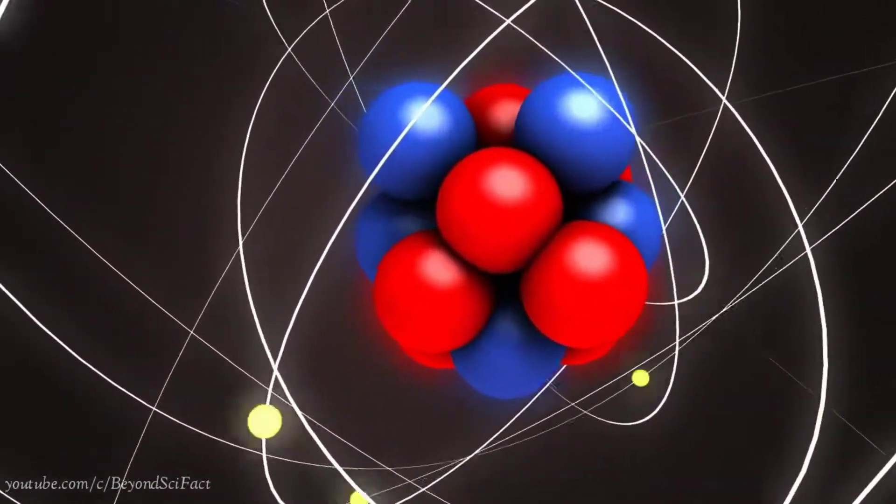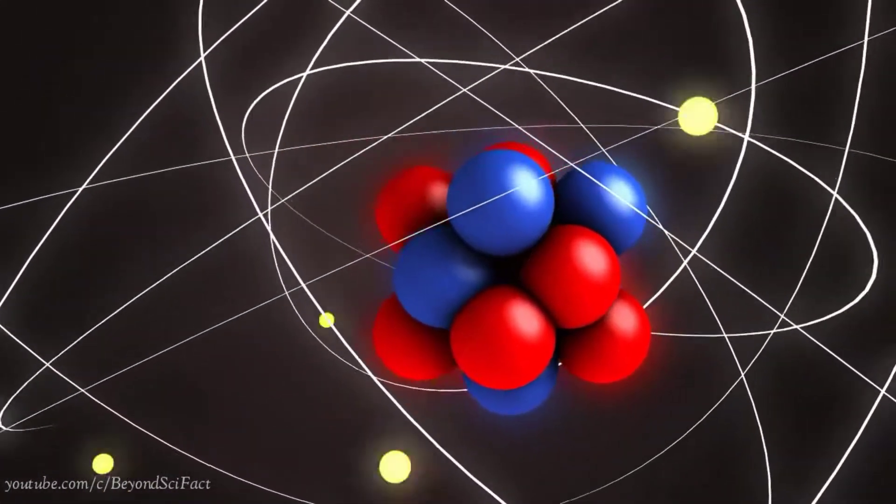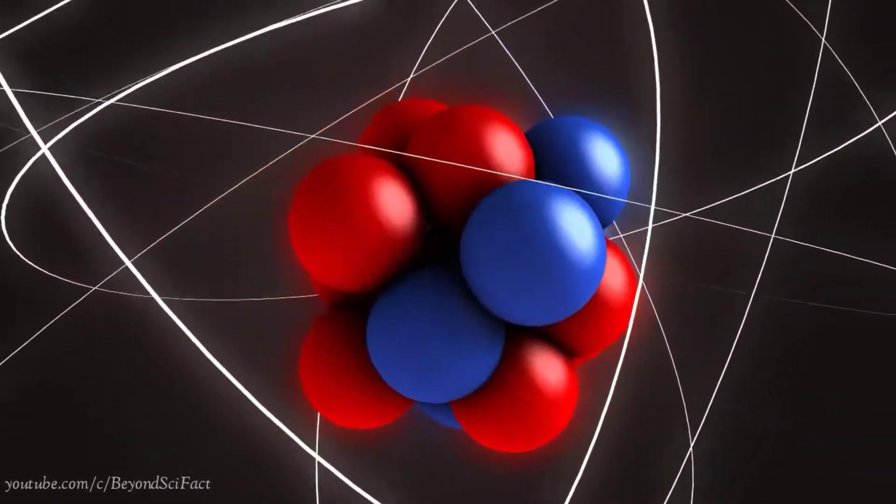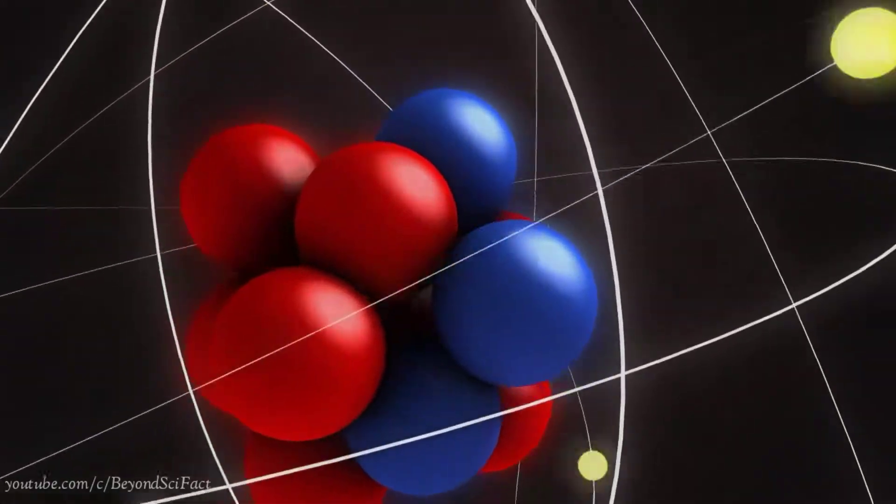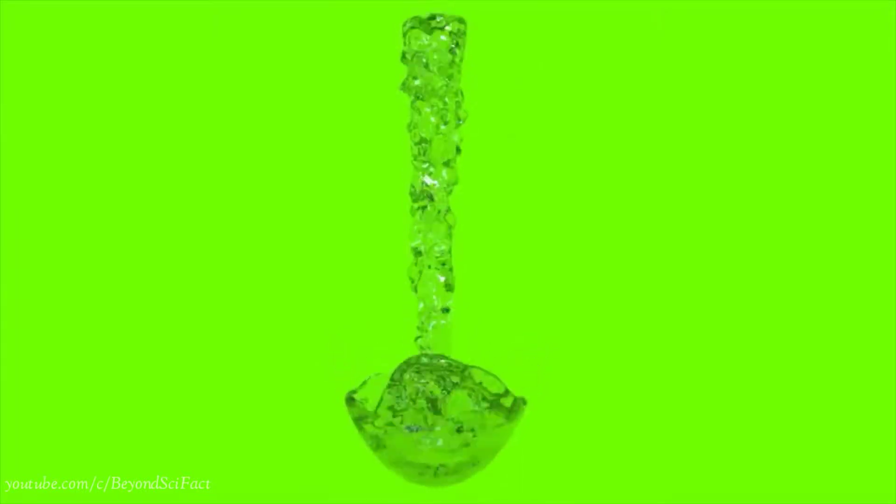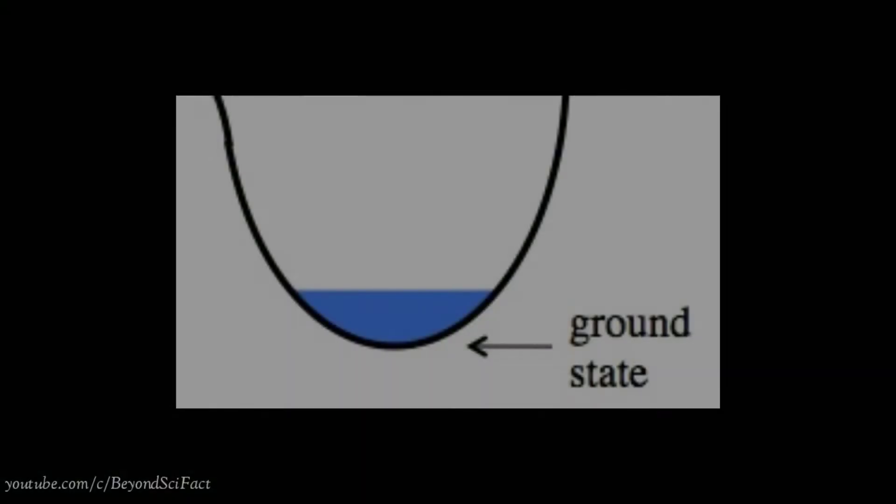As you all know, from electrons to physical systems, everything tries to achieve its lowest possible energy state, or ground state, to become stable. For example, if you pour water into a tub, there are many ways the water could arrange itself, but it will rapidly assume the ground state.